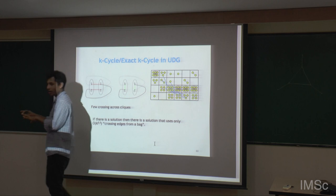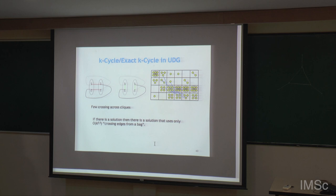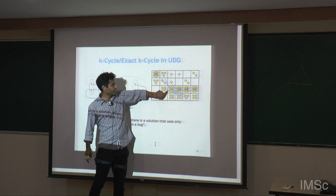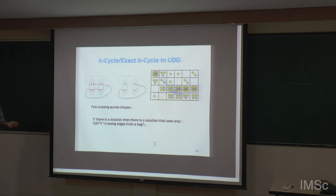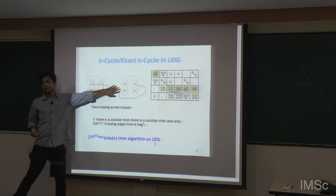More precisely, one clique sees only a constant number of other cliques. Using these two facts, we can bound the number of interactions across the bag to at most √K vertices, and using these lemmas we can design an algorithm with the desired sub-exponential running time.